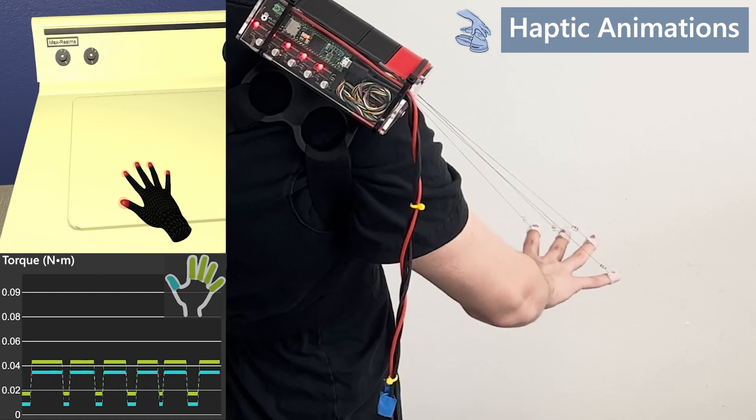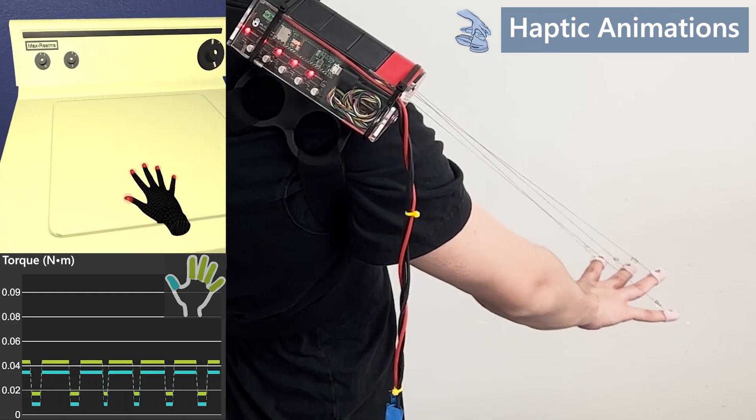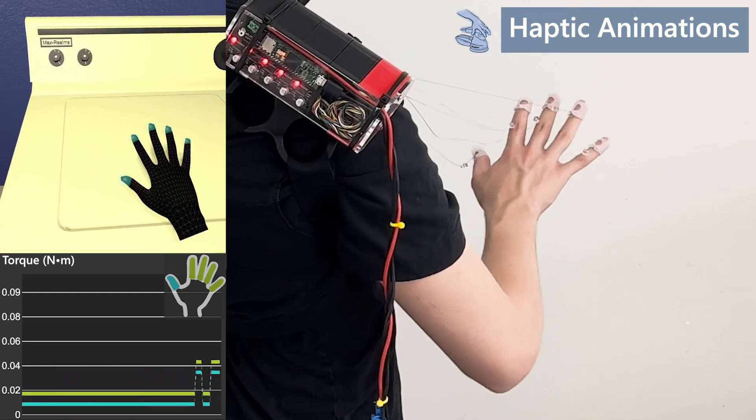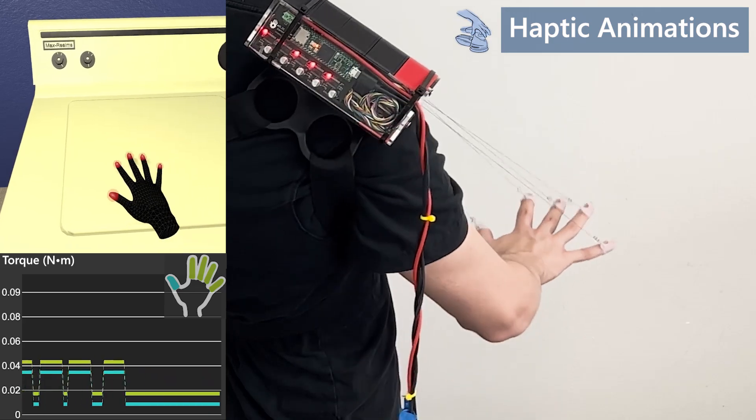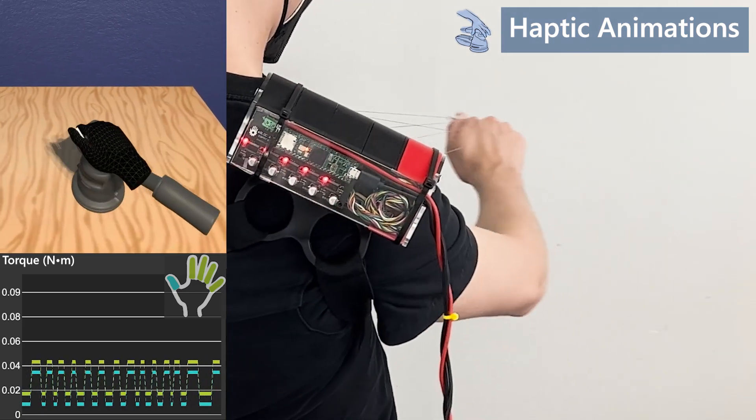Additionally, virtual objects can exhibit animated haptic effects upon static touch contact, such as vibrations from this running washing machine, or when operating this power sander.